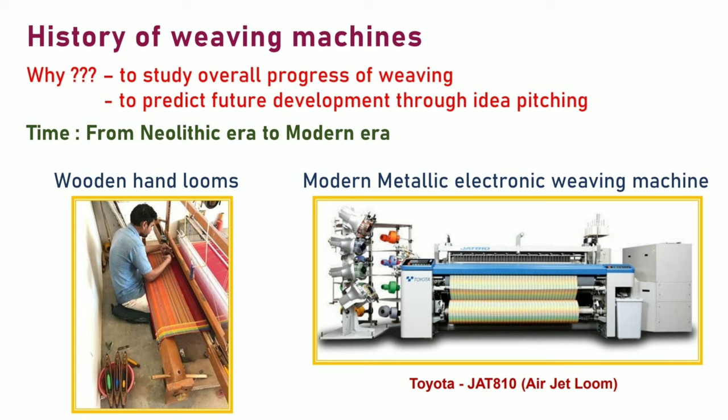But why? This learning is helpful in two ways: to study overall progress of weaving, and to predict future developments through idea pitching. History of weaving machines covers a time span from the Neolithic era to the modern era. Today we have wooden handlooms as well as modern metallic high-speed electronic weaving machines like the Toyota J80810 Airjet Loom.